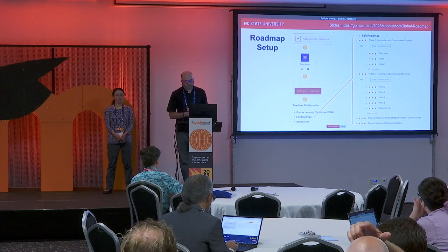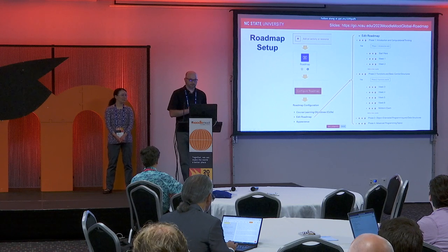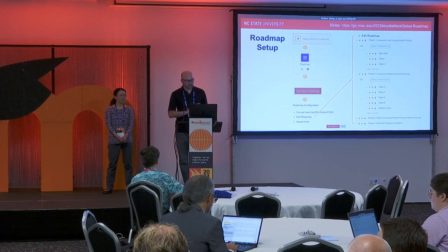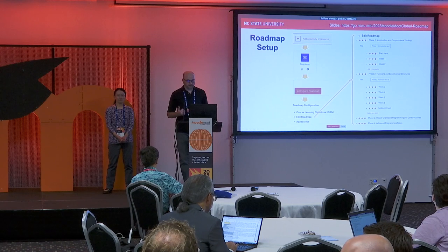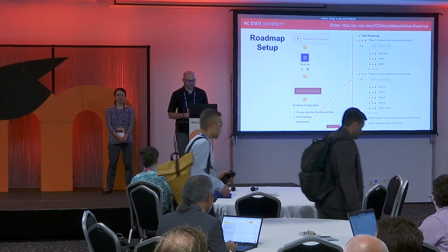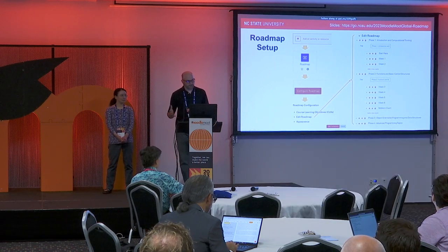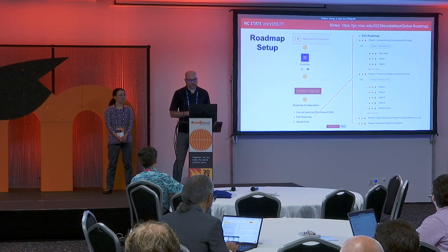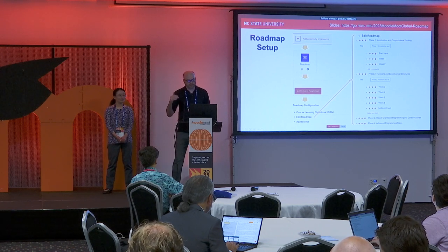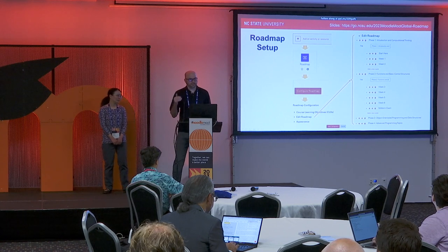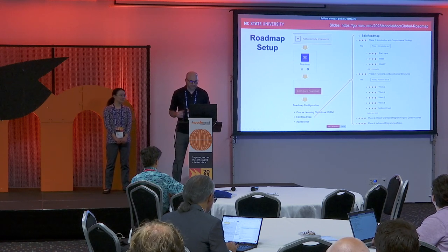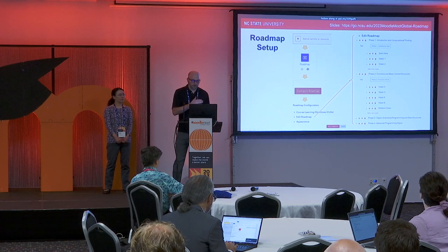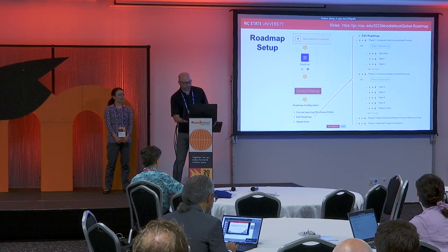For the roadmap setup, we tried to make this as simple as possible since our earlier versions were very difficult. You add it to the course like any other activity, click on the configure roadmap button, and you get three sections to work through. First you configure your course learning objectives so they can be displayed and tied to cycles. Then you get the edit roadmap section where you can adjust the appearance. In the edit roadmap section, we display phases in a hierarchical fashion. Within phases there are cycles, and within cycles the steps — all for you to configure in one big list. They're collapsible, sortable, and you can edit and delete all on one page.